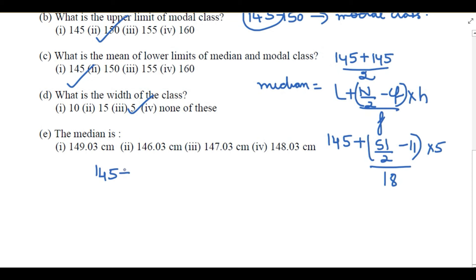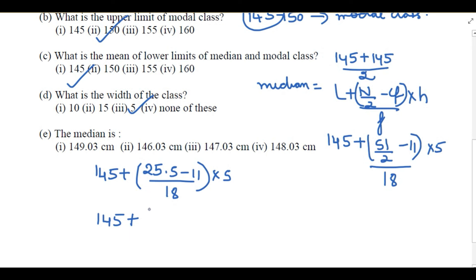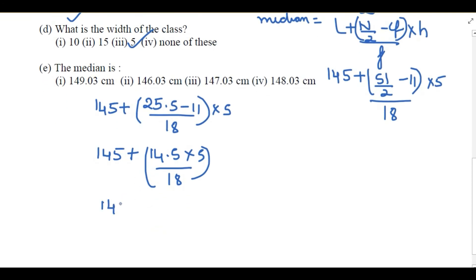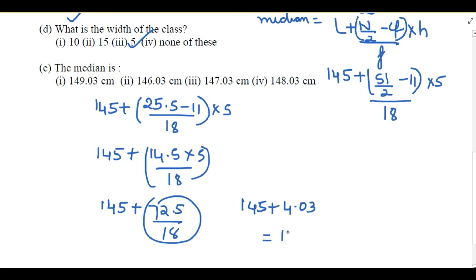Simplifying: 145 + [(25.5 − 11) / 18] × 5 = 145 + [14.5 / 18] × 5 = 145 + 72.5 / 18 = 145 + 4.03 = 149.03 centimeters. So the median height is 149.03 cm.